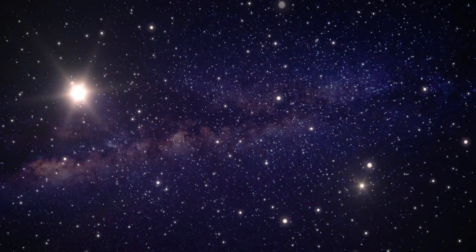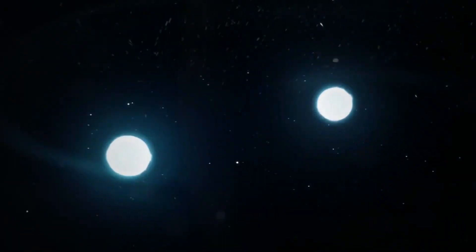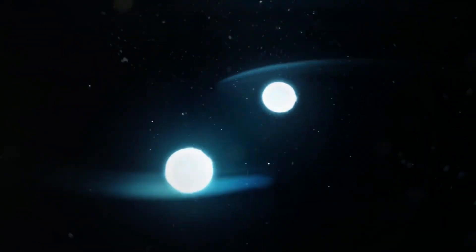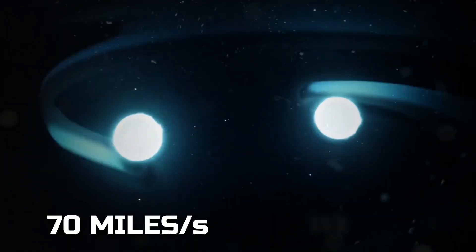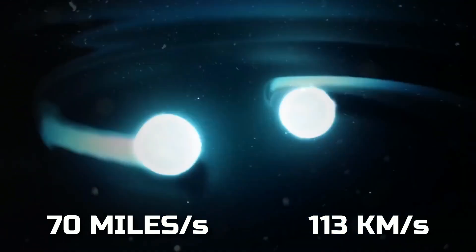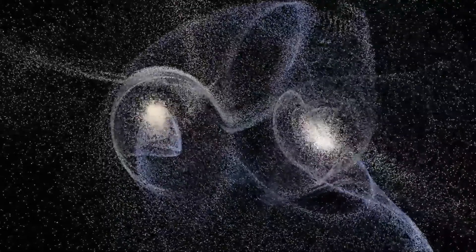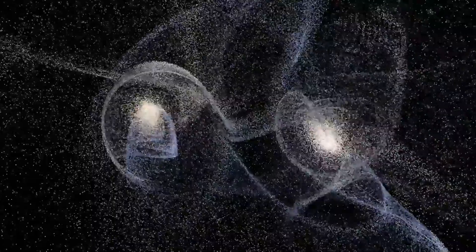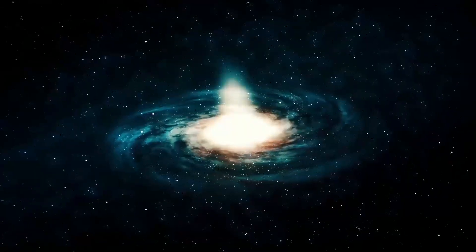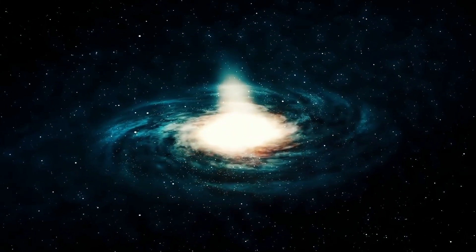And this cosmic clash of titans has already started. Each galaxy is hurtling towards each other at a staggering speed of 70 miles or 113 kilometers per second. As the two galaxies interact gravitationally, stars, gas, and dust are being distorted and stretched, creating a beautiful yet chaotic dance in the sky.